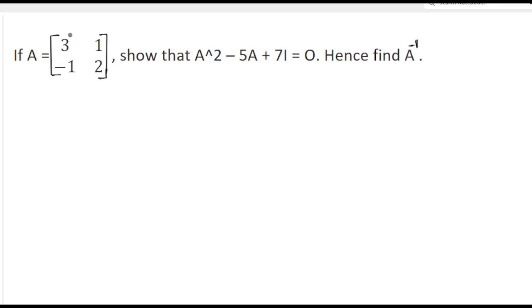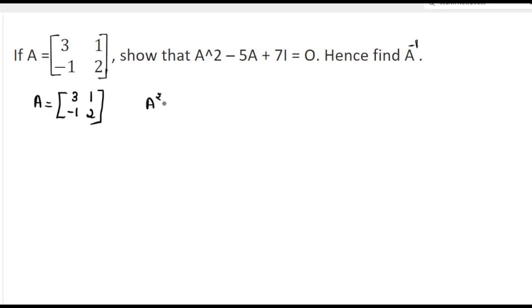If A equals matrix [3, 1, -1, 2], show that A squared minus 5A plus 7I equals 0, and hence find A inverse. Given matrix A equals [3, 1, -1, 2], we need to prove that A squared minus 5A plus 7I equals 0.